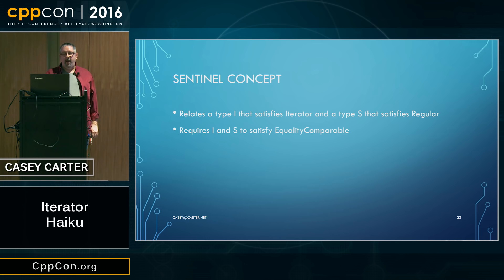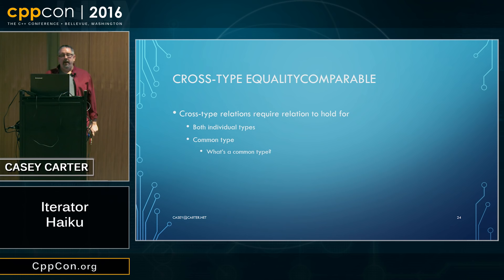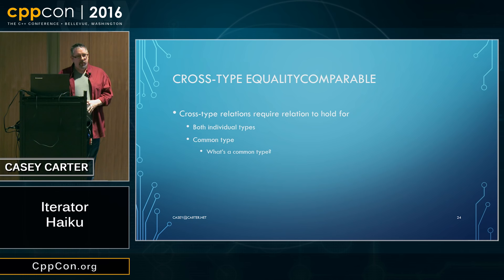Sentinel is a relationship that exists between some type i that satisfies the iterator concept and another type s that satisfies regular. Regular meaning it can be copied and moved and default constructed and compared for equality and inequality. So a sentinel has to be a regular type. And of course, once I have types i and s, I need a way to compare them to tell when I'm at the end of a range — they have to also be equality comparable.